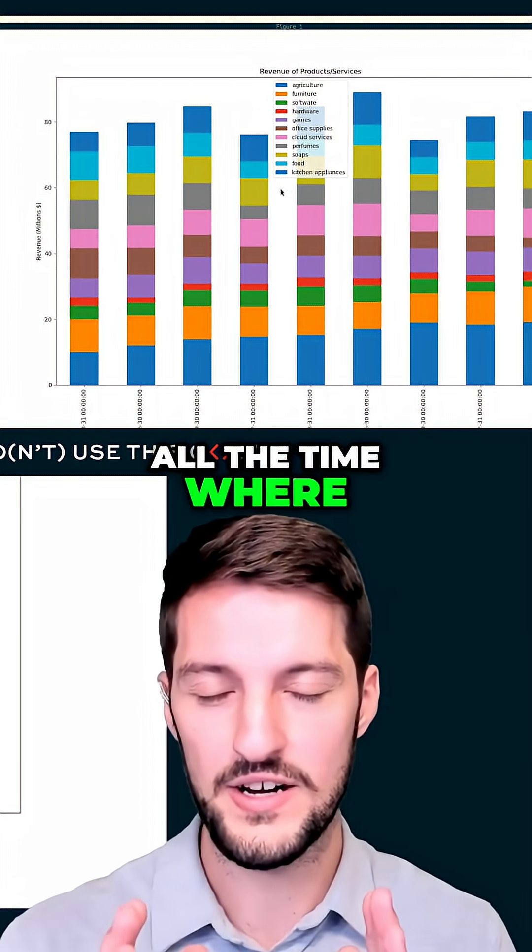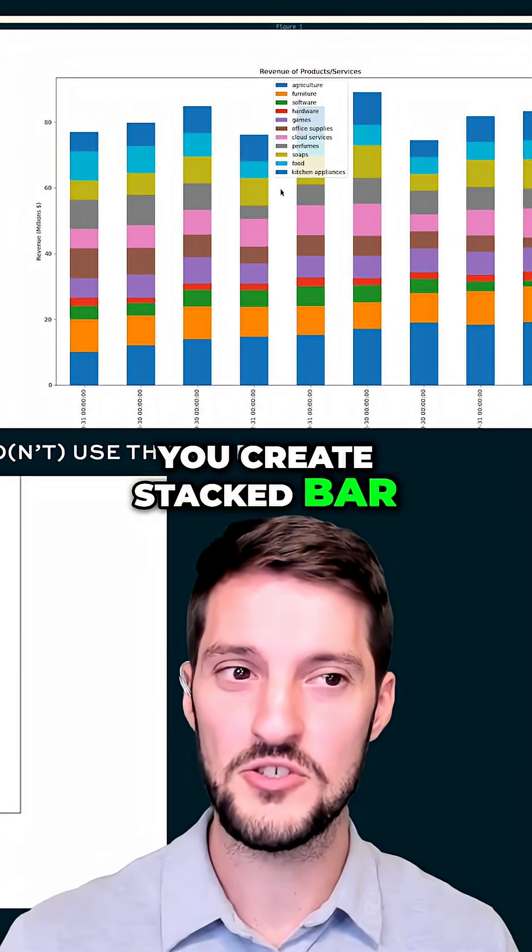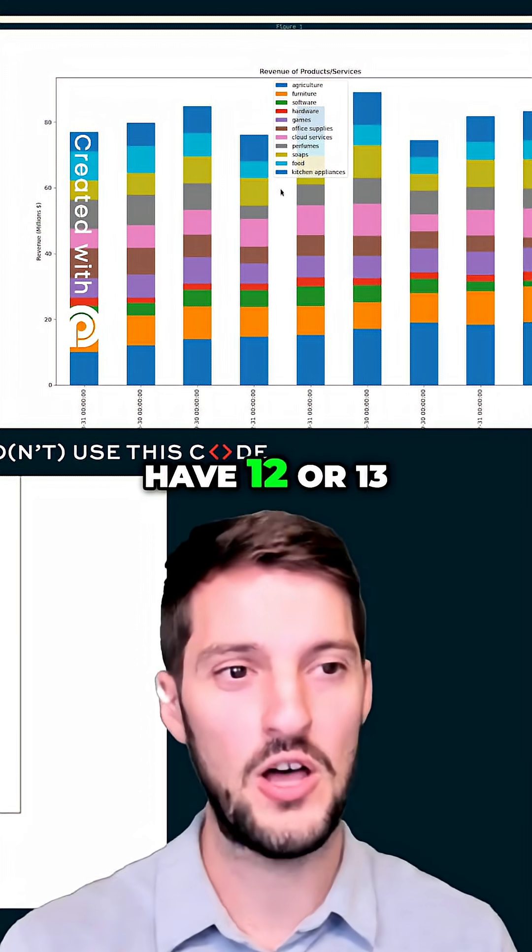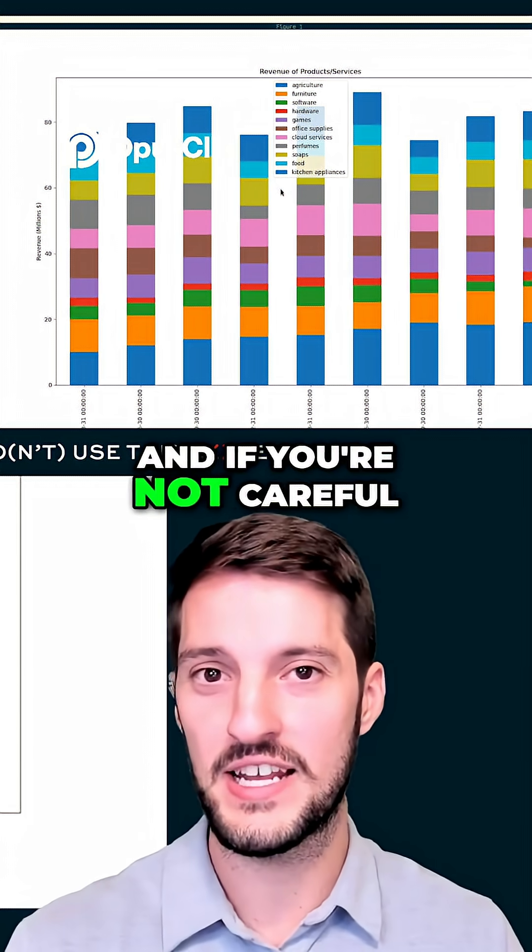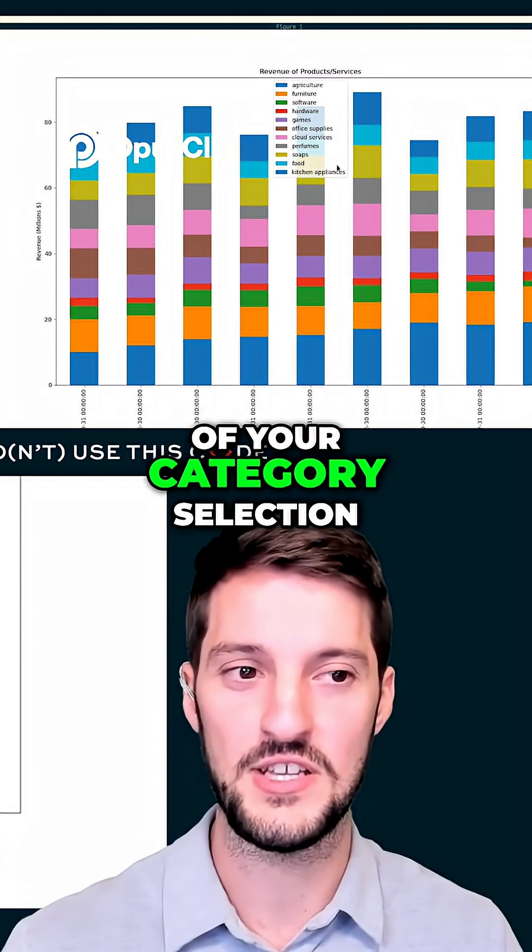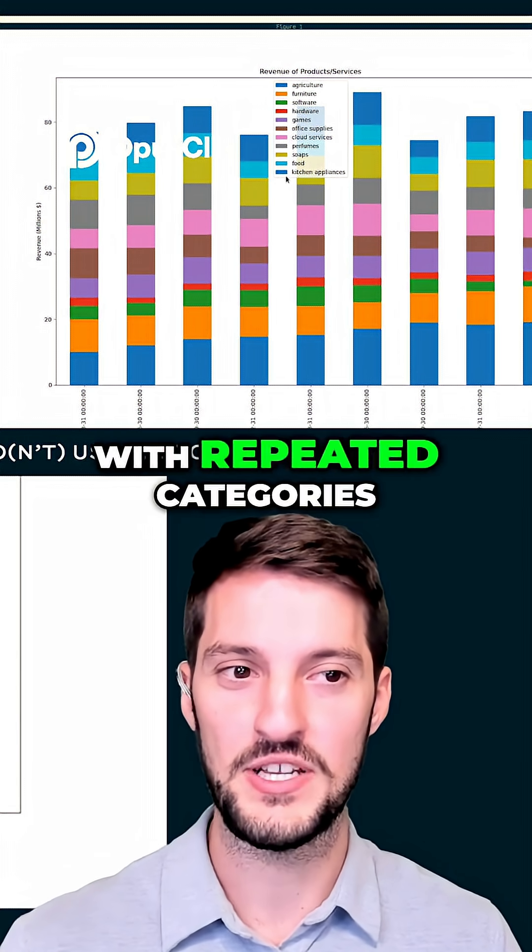I see this all the time where you create stacked bar charts with 12 or 13 different categories. If you're not careful, especially with your colorization of your category selection, you end up with repeated categories.